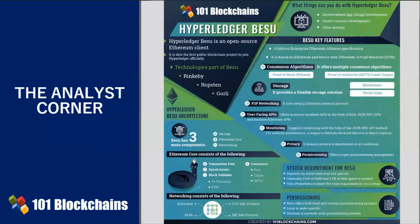Hyperledger Besu blockchain supports monitoring features, including network and node performance monitoring. For privacy, Besu offers an out-of-the-box private transaction manager. Besu enables users to create and manage privacy groups. The transactions are signed by a specific key or a random key. To sign with a specific key, you need to use the privacy marker transaction's sign-in key file.